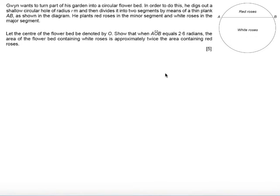In this question, Gwyn wants to turn part of his garden into a circular flower bed. In order to do this, he digs out a shallow circular hole of radius R meters, then divides it into two segments by means of a thin plank AB, as shown in the diagram.